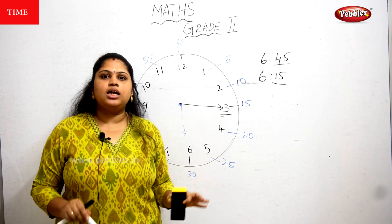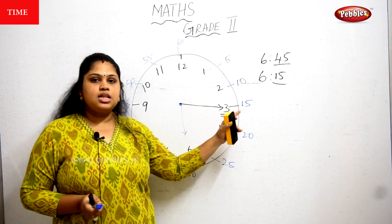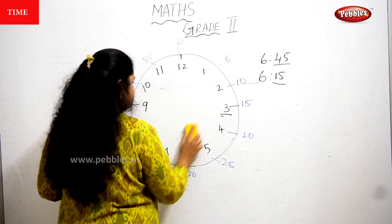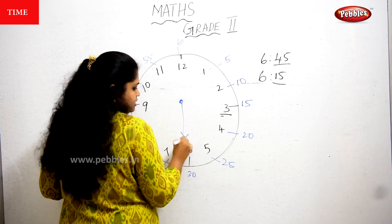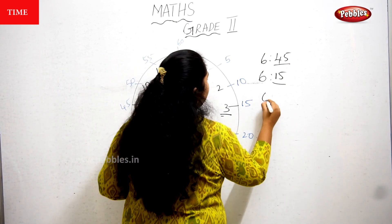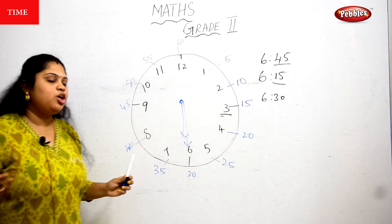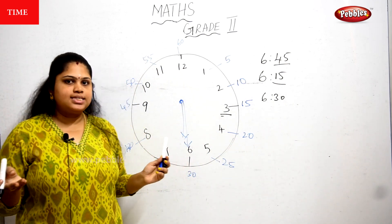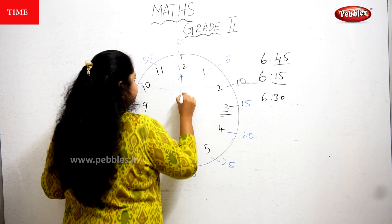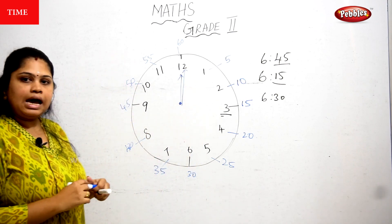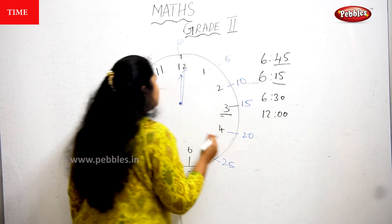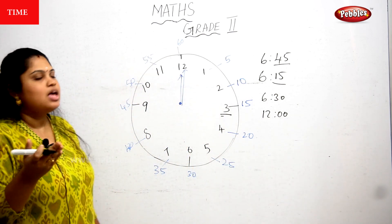The small needle tells the exact number where the arrow points, and the big needle tells the skip-count-by-5 value. Now, keeping both needles at 6, the time is 6:30. If both needles are at 12, you simply say it's 12 o'clock — you cannot say '12:60.'